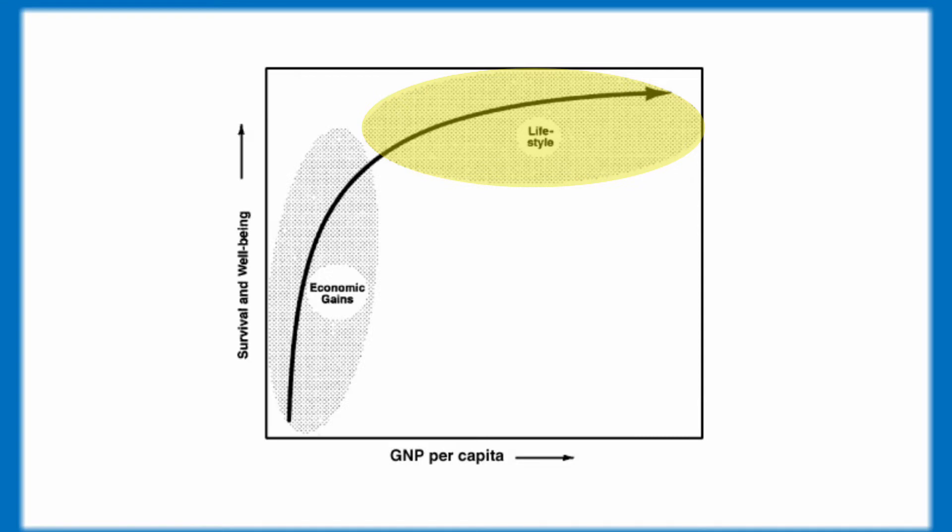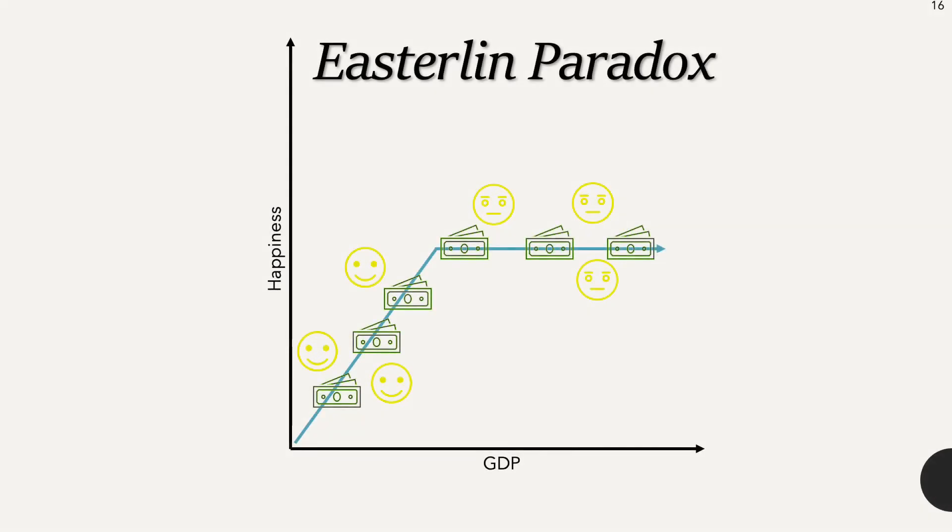This seemingly contradictory occurrence is called the Easterlin paradox, which states that those with more income are, on average, typically happier than those with less income. But over time, as incomes of people improve, their happiness does not go up.